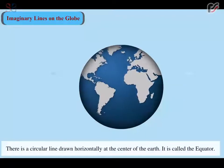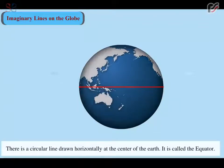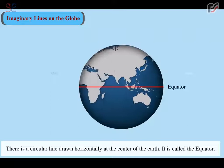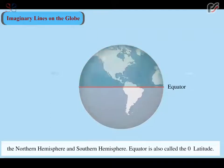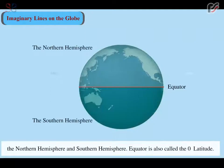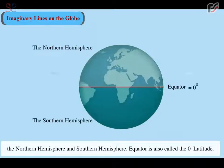There is a circular line drawn horizontally at the center of the Earth. It is called the equator. It divides the Earth into two equal halves, the northern hemisphere and southern hemisphere. Equator is also called the zero-degree latitude.